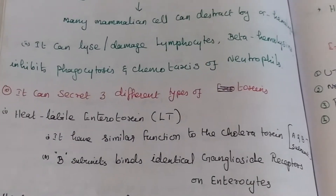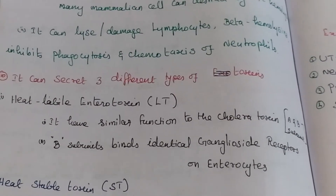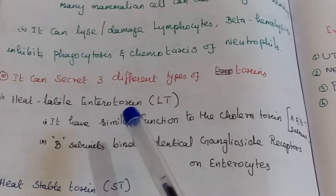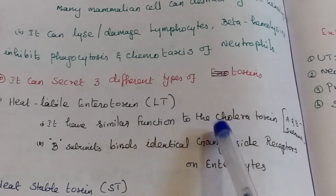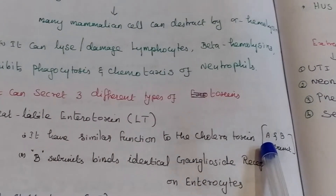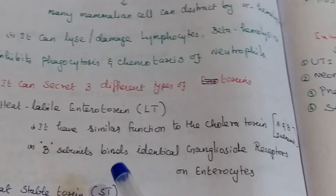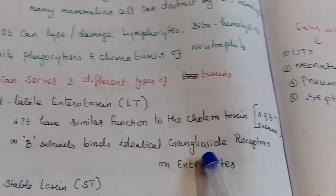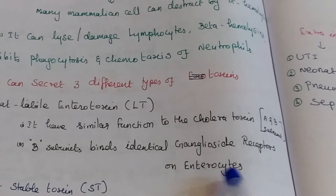E. coli secretes three different types of toxins. The first is the heat-labile enterotoxin, LT. It has a similar function to cholera toxin, meaning it has A and B subunits. The B subunit binds to the galactoside receptor on enterocytes.